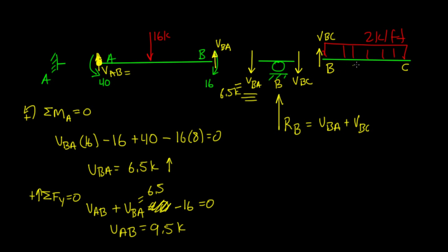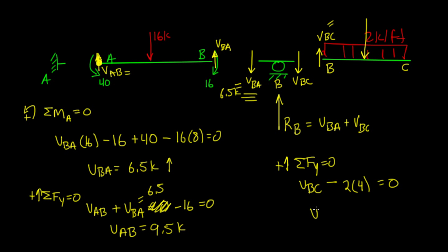Now let's look at member BC. With only a distributed load going down and one shear going up, summing forces in the y-direction: V_BC minus 2 kip per foot times 4 feet equals zero, so V_BC equals 8 kips. Therefore, the reaction at B is V_BA plus V_BC equals 6.5 plus 8, giving a reaction of 14.5 kips.